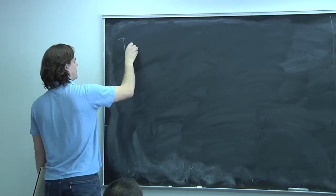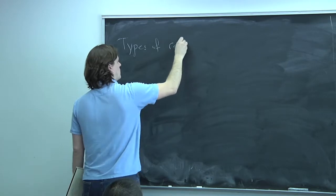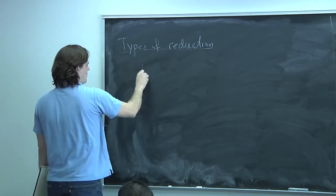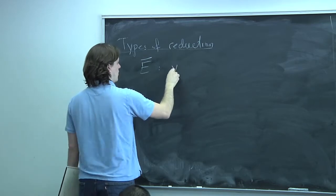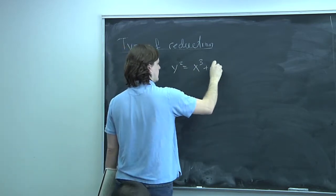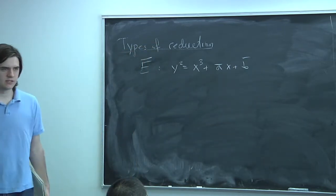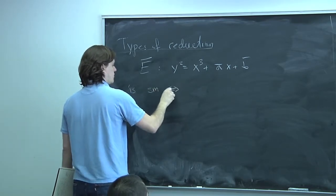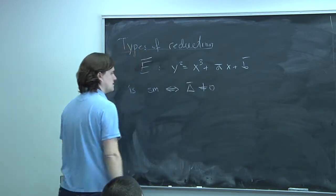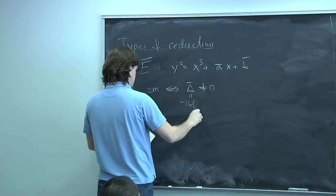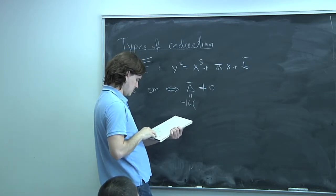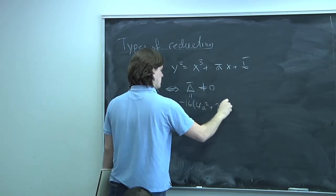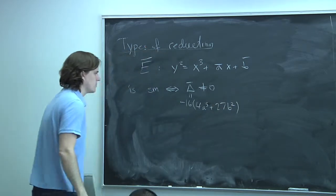The first thing I want to talk about is the types of reductions that are possible. The reduced equation Ē is x³ + ā·x + b̄ for ā and b̄ the reductions of a and b. This equation is smooth if and only if the reduced discriminant is nonzero. The discriminant was -16(4a³ + 27b²). The reduced discriminant being nonzero is the same as saying the discriminant is a unit of R.